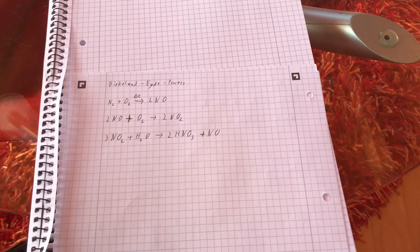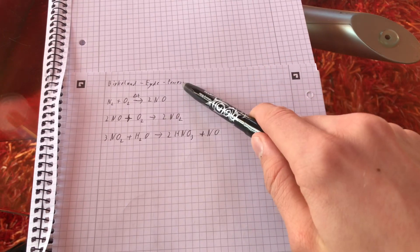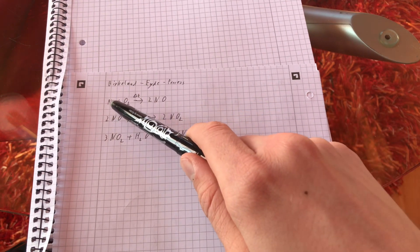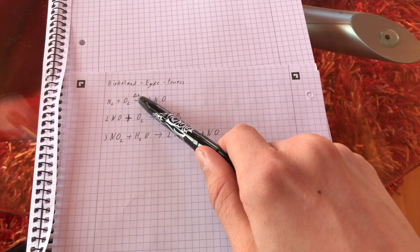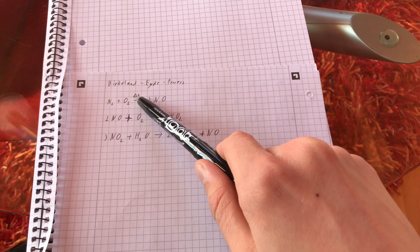The process I showed to you is known as the Birkeland-Eyde process, in which nitrogen reacts with atmospheric oxygen at a high temperature to form nitrogen monoxide.